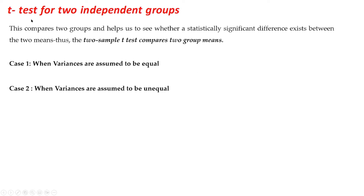Here we have a recap of what is the t-test for two independent groups. This t-test helps us to see whether a statistical significance exists between the two means — it compares the means of two groups. Under this t-test we have two cases: when the population variances are assumed to be equal and when they are assumed to be unequal. In the equal case, we assume sigma 1 square is equal to sigma 2 square.